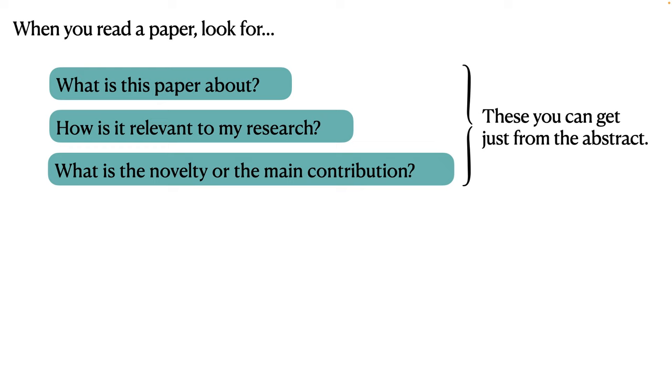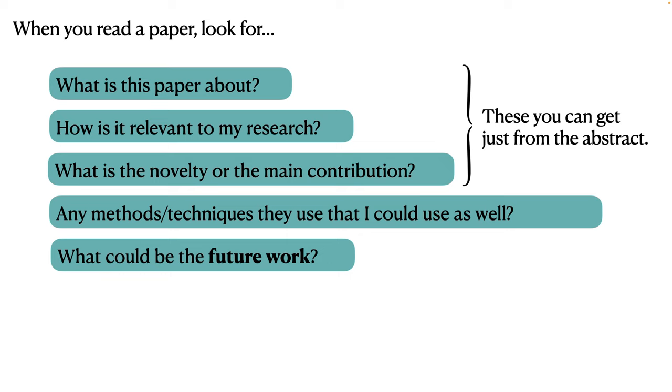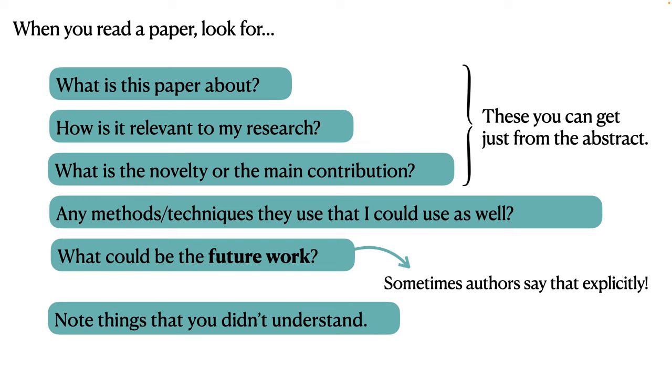But let's say that you continue to read this paper, and you now also look for any interesting methods or techniques that could be useful to you as well. And the authors might be computing something in a way that you haven't thought about before but could benefit your work. Next, it's great if you can understand from the paper what could be the future work. Sometimes authors say that explicitly, typically in the conclusions of the paper. Sometimes they don't. And it's a good exercise for you to try to think of possible future extensions, ideally ones that you yourself might be able to tackle in your PhD.